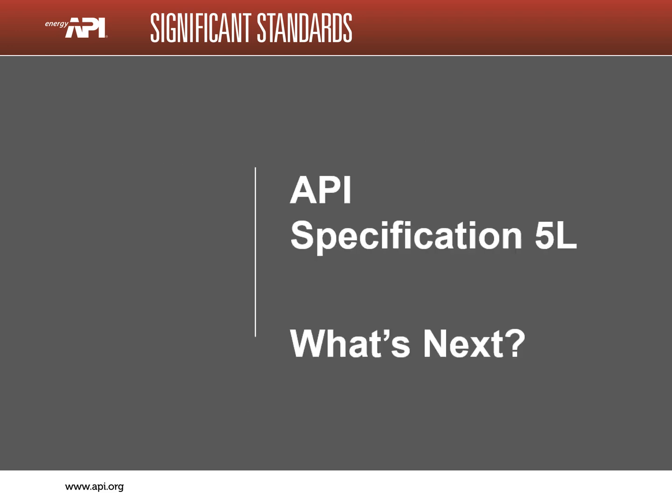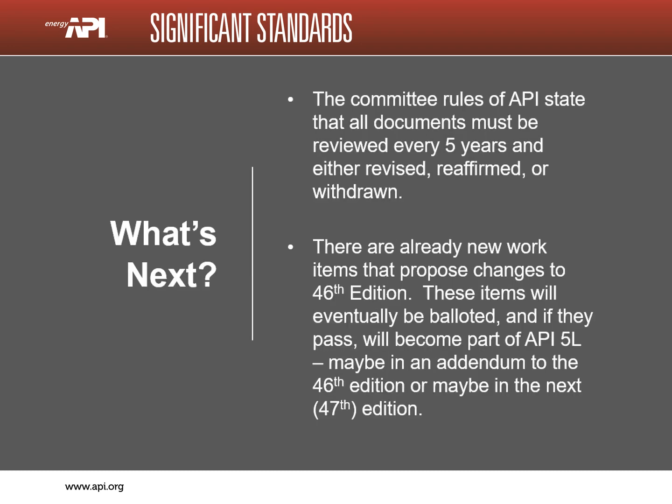This concludes our review of the 46th edition of API 5L. So, what's next for the document? API procedures require that all standards must be reviewed every five years and either revised, reaffirmed, or withdrawn. There are already work groups working on changes that will affect the 46th edition. These items will be balloted and, if they pass, they will become part of API 5L — perhaps as an addendum to the 46th edition, or maybe they will appear in the 47th edition.